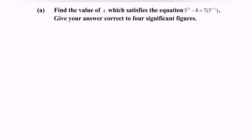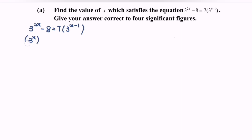So first, find the common terms. We modify the situation by using the rules of indices, where we have 3 to the power of 2x minus 8 equals 7 multiplied by 3 to the power of x minus 1. By using the rules of indices, this becomes 3 to the power of x, to the power of 2, minus 8 equals 7 multiplied by 3 to the power of x times 3 to the power of negative 1.